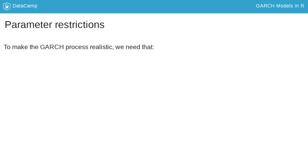You further need two types of parameter restrictions. First, the omega, alpha and beta should be positive such that the GARCH variance is always positive.